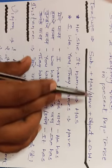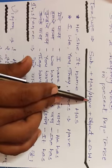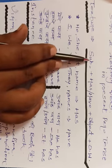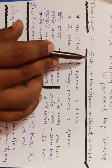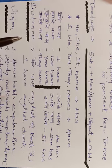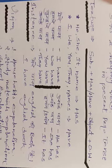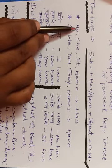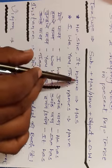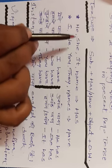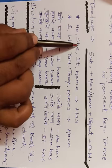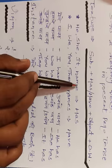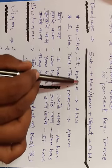Has aur have ka use clear ho gaya. Singular subject ki series — jise hum SS bolte hain: he, she, it, and name. Aur plural subject ki series — jise hum PS bolte hain. PS mein kaun kaun aate hain? I, we, you, they, and names — meaning more than one name. Toh I, we, you, they ke saath aap kiska use karenge? Have ka use karenge. Toh jab he, she, it ya name aayega — has; aur I, we, you, they aayega — have.